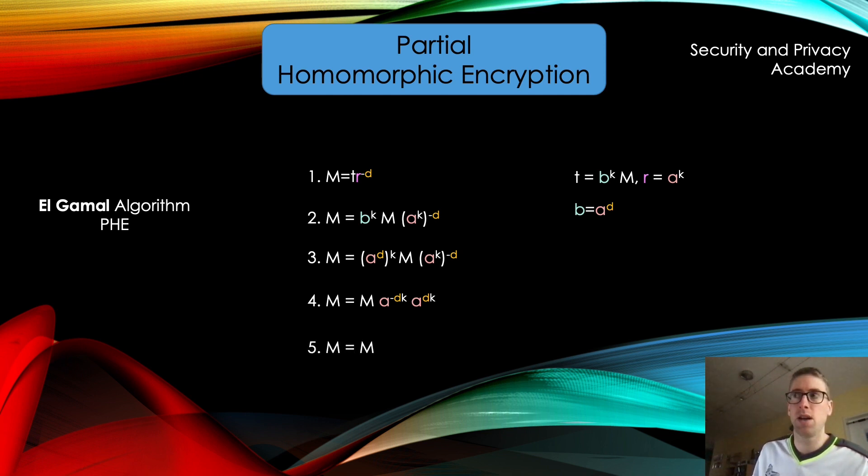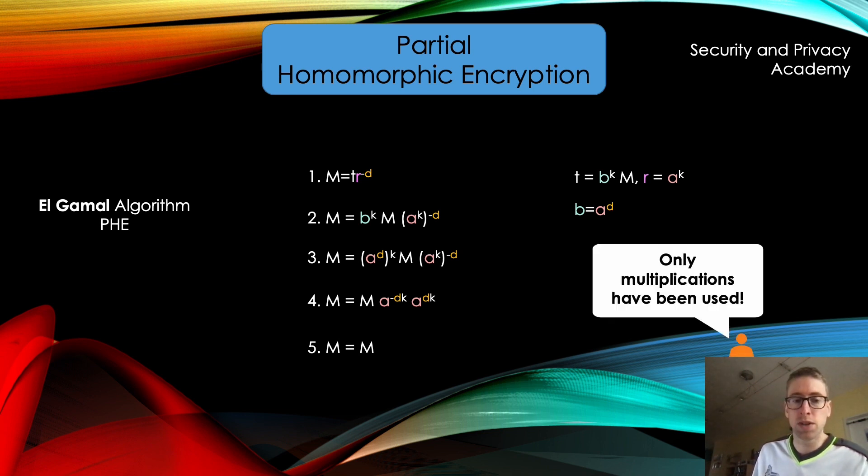And because only multiplications have been used, this process is homomorphic to multiplication. That's the mathematical property of El Gamal algorithm, meaning that the message is not altered in its encrypted form.